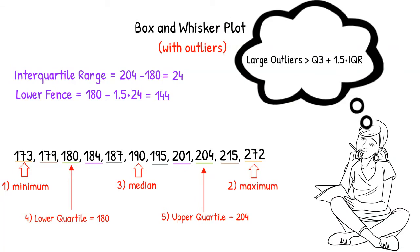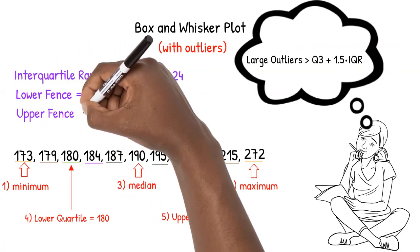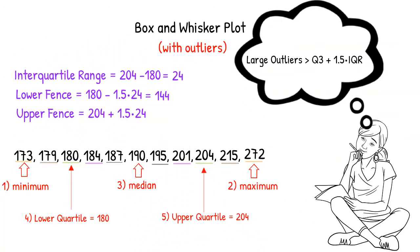Large outliers are greater than the upper quartile plus 1.5 times the interquartile range. This will create an upper fence needed for our display. The upper fence is equal to 204 plus 1.5 times 24. The upper fence is equal to 240.